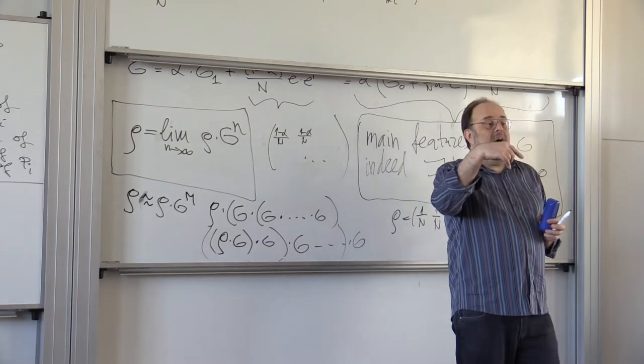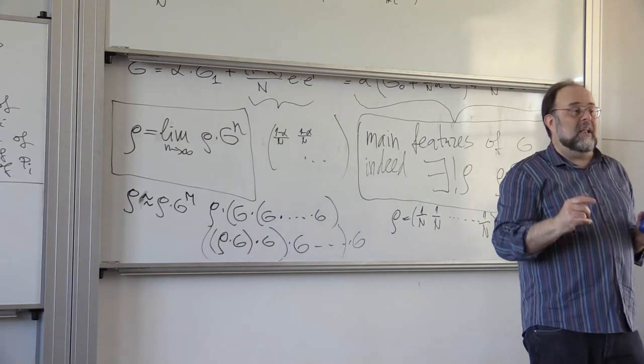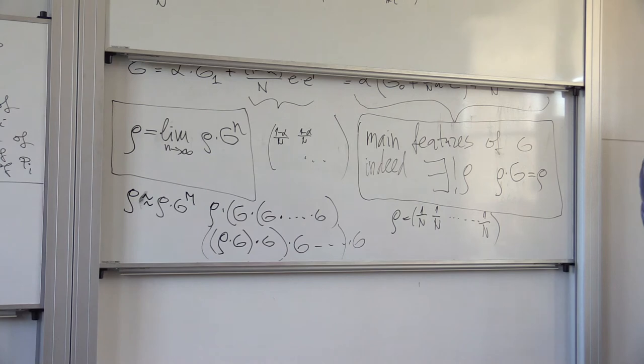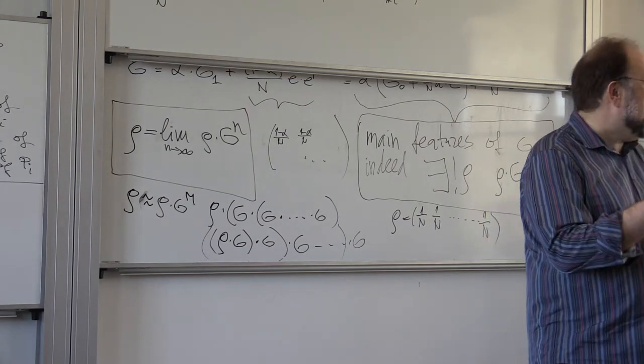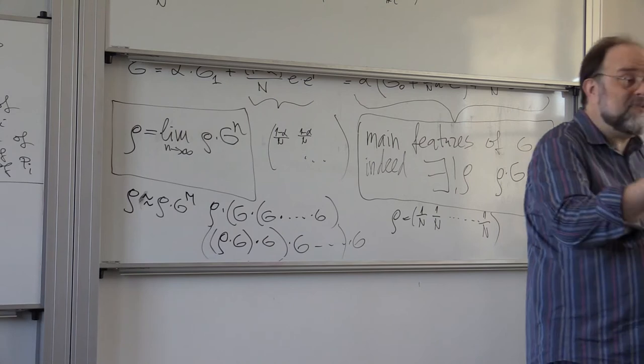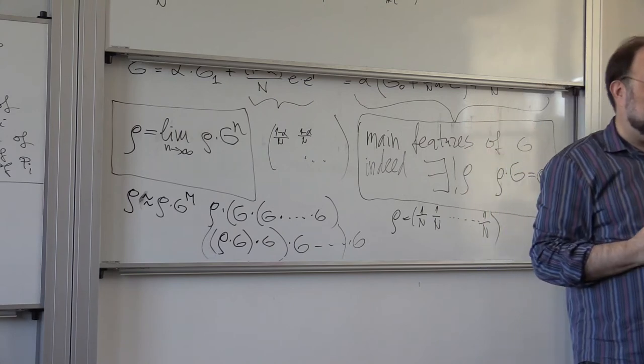If you increase alpha and say make it 90%, instead of 100, it goes up to something like 300. So now you have to strike a balance, right? Because this random surfing has to reveal the link structure of the web.